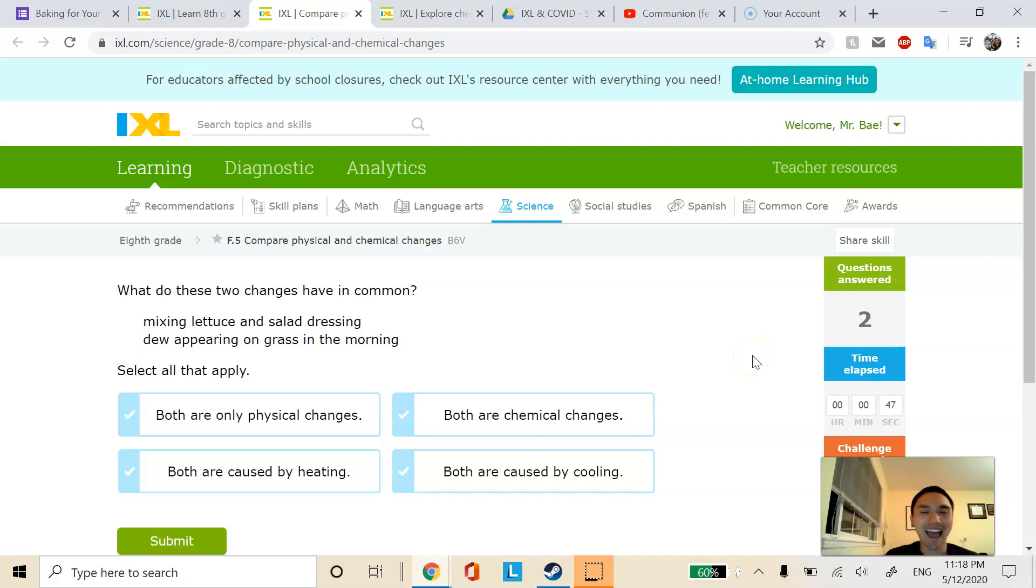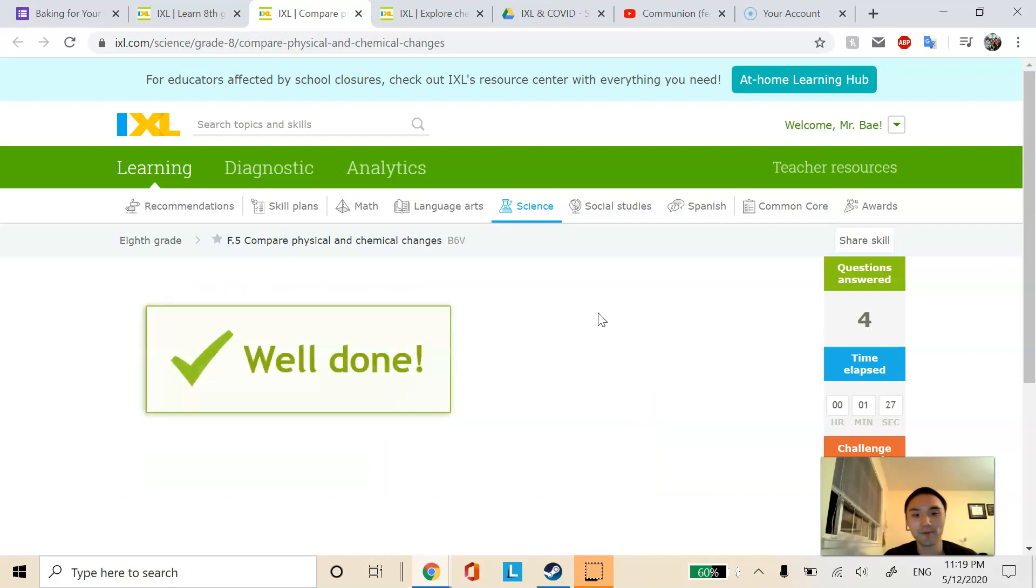Next one. Mixing lettuce and salad dressing is actually a physical change. You're just tossing things in, just kind of mixing into a bowl. So it's physical. And dew appearing on the grass in the morning is also physical. You basically got water vapor to water. So these are both physical. Next one. What do these have in common? An iceberg melting slowly is a physical change. Breaking a piece of glass is also a physical change. So I would pick physical changes on both of these. The cooling heating, once again, it's not clear cut if the glass is heating or cooling. So I would just ignore those chances and don't pick either.